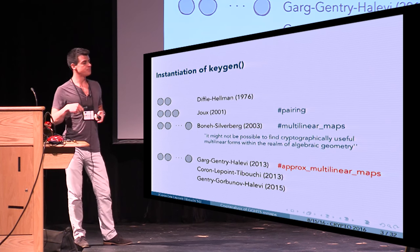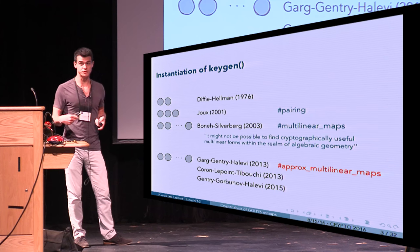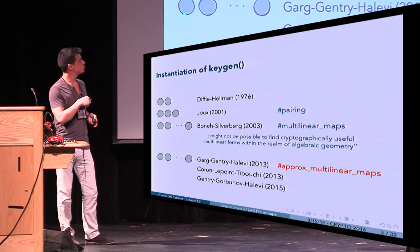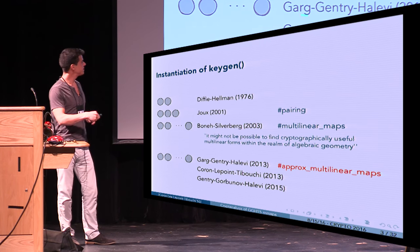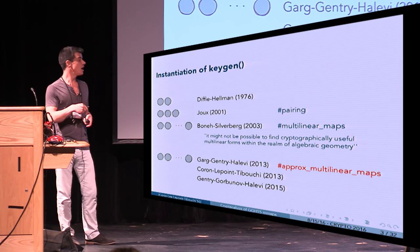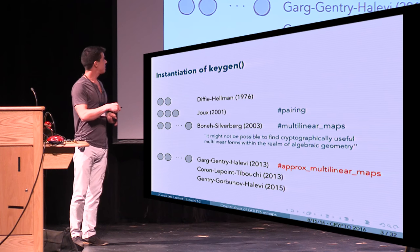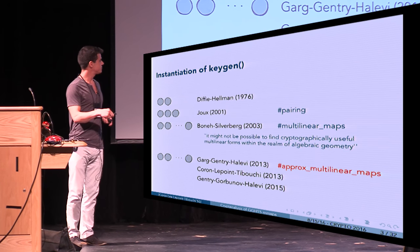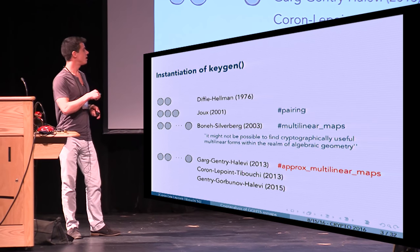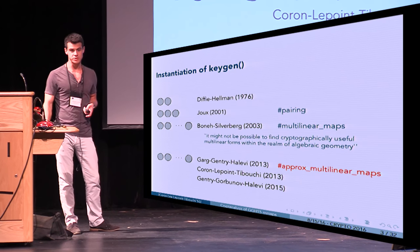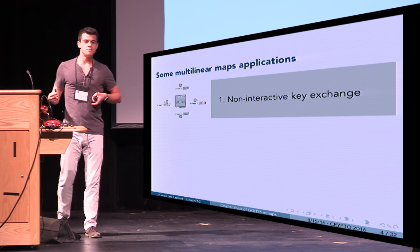In 2013, approximate multilinear maps were introduced as a substitute, and they also allow deriving a key generation procedure for n parties. We essentially have three candidate schemes: the first from Garg, Gentry, and Halevi at Eurocrypt 2013, then the CLT scheme at Crypto 2013, and the Gentry, Gorbunov, and Halevi scheme at TCC 2015. In this talk I will describe the cryptanalysis of this third candidate.